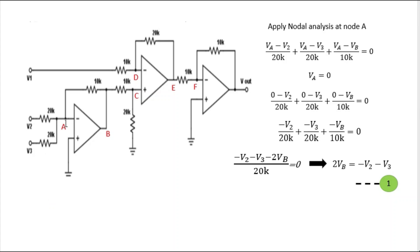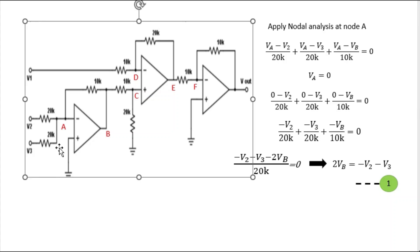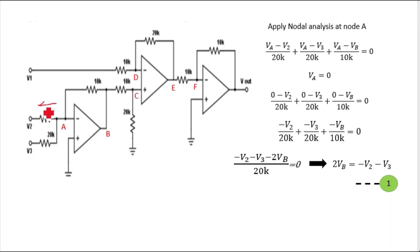V2, V3 — I have taken A as a node. Applying nodal analysis at node A. This node A is having many branches — three branches are there. I'm considering all the currents as outgoing for each node, and accordingly I will apply the nodal analysis.